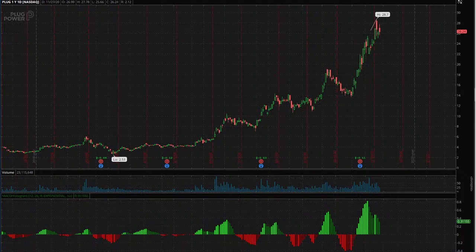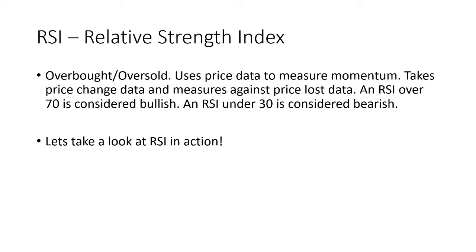Let's look at another indicator: RSI, Relative Strength Index. This is a great one and another tool you've got to have in your toolbox. What it does is very simple — it's measuring momentum. Like I told you, there are only two data points being measured on any indicator: price and volume. RSI looks at the price change data on one period compared to another — price gains versus price loss. It's almost like a volatility index. An RSI over 70 is considered bullish and an RSI under 30 is considered bearish. At its simplest, it's looking at buying and selling pressure. When you hear somebody say a stock looks overbought or oversold, more than likely they're looking at an RSI indicator.